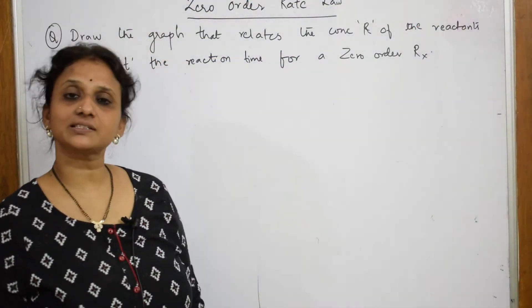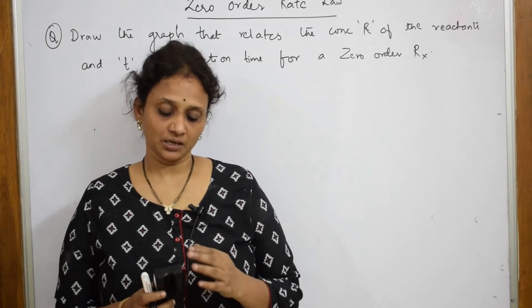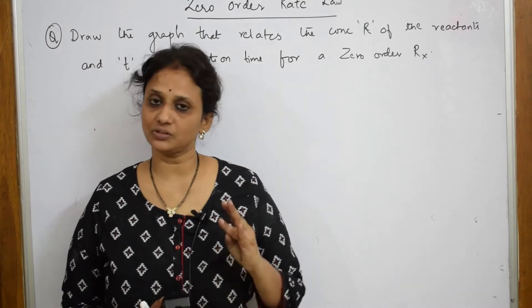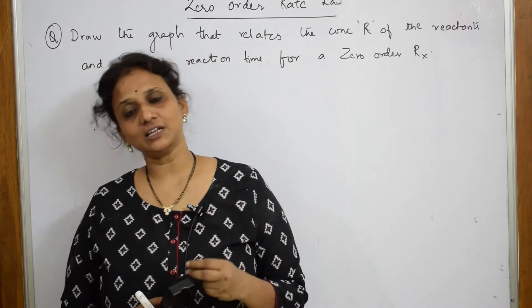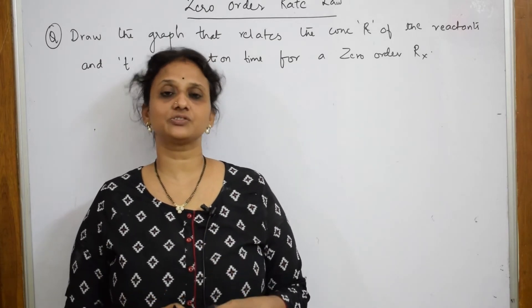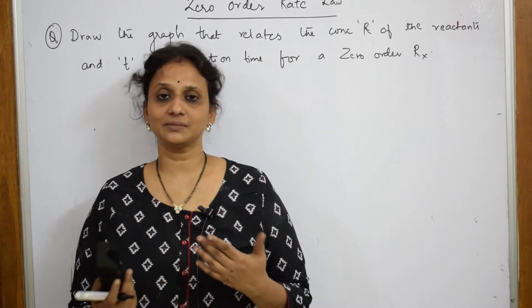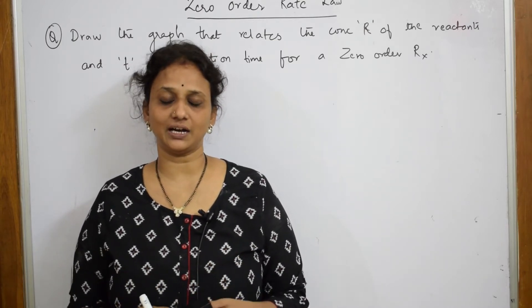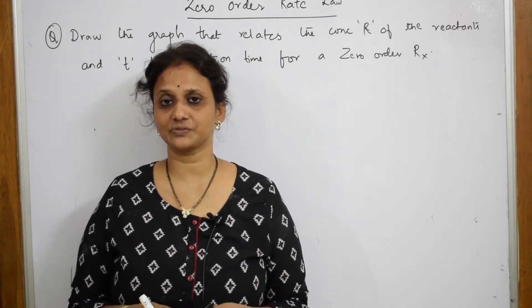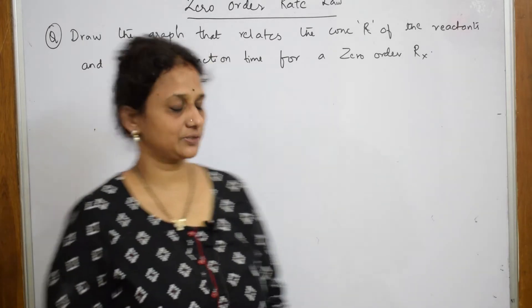Let us come back to the next topic: zero order rate equation and rate kinetics. When a zero order reaction is asked, they will either ask you the units directly, the whole derivation, the graphical representation, or the examples for zero order. Just identify the examples, because one reactant may be given and they will ask you what is the rate constant. Now I am going to do the graphical representation of zero order reaction.